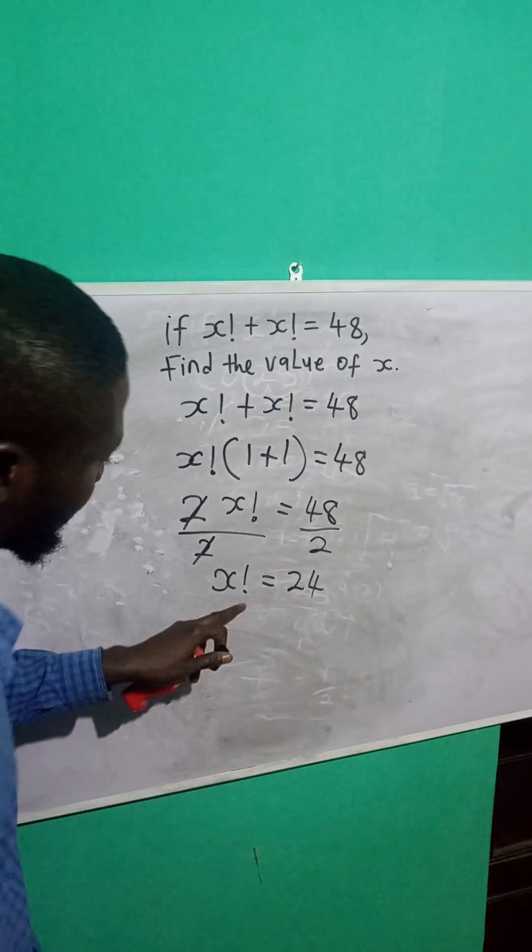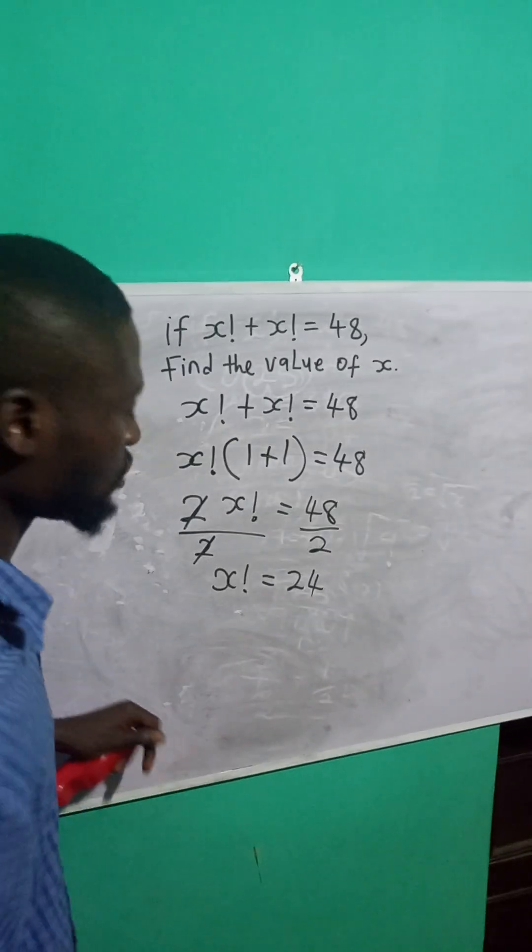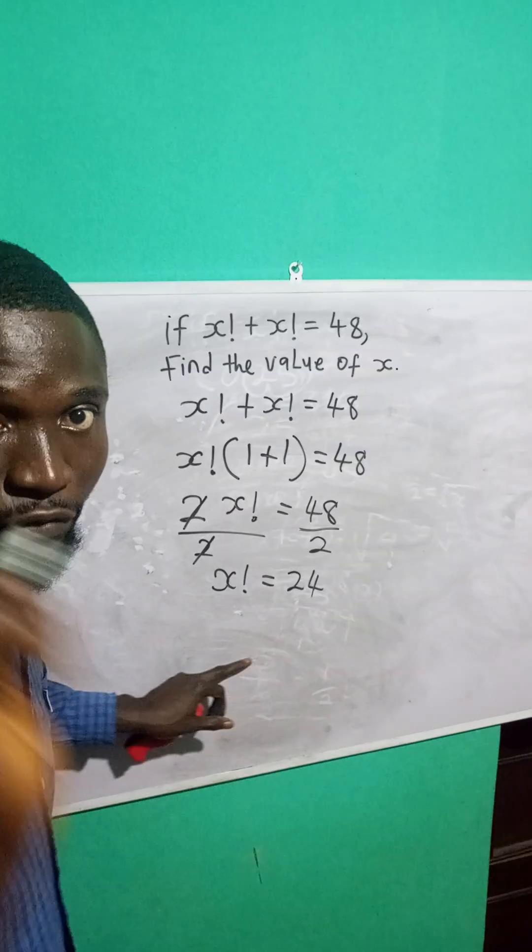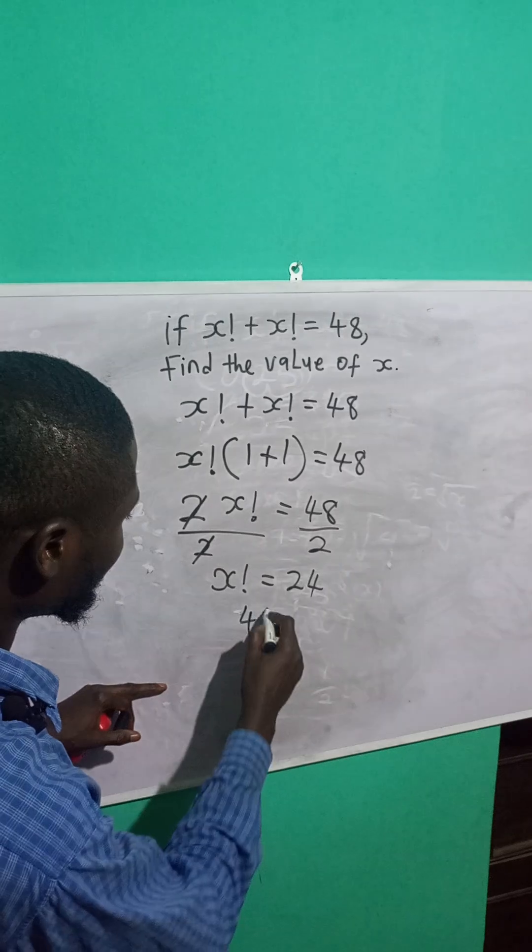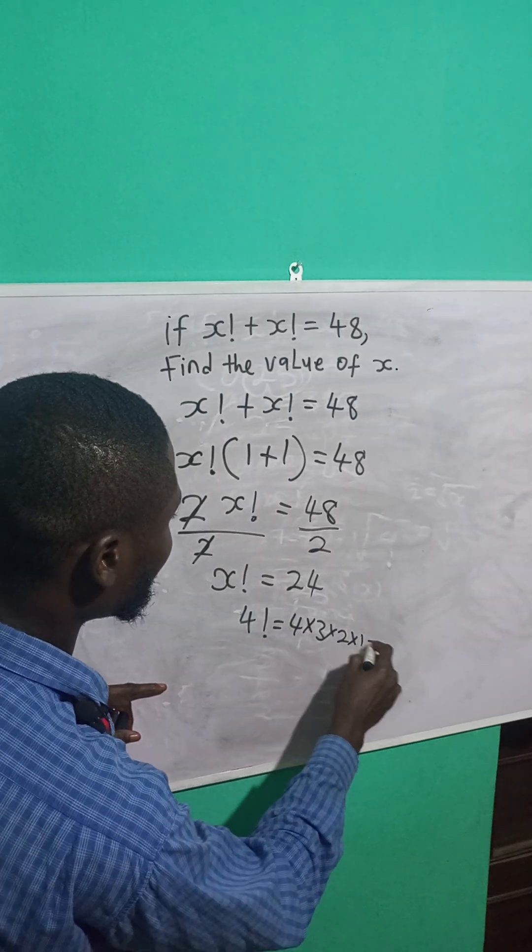Now, remember, I'm looking for the value of x, not x factorial. So I'm going to look for the factorial of a number that will give me 24. And that number is 4. Because 4 factorial is 4 times 3 times 2 times 1.